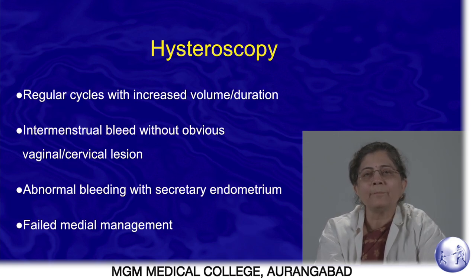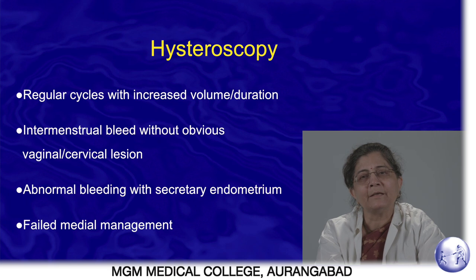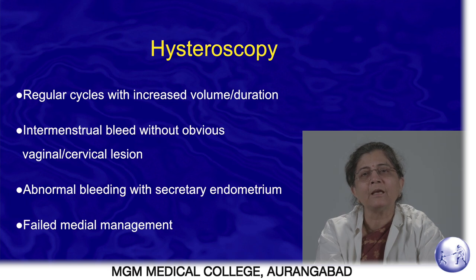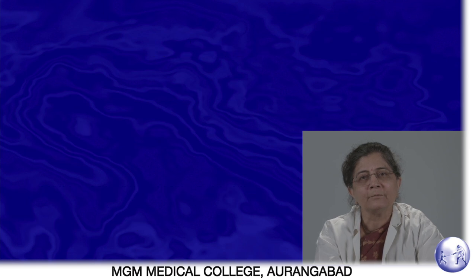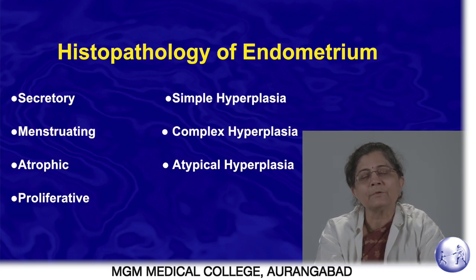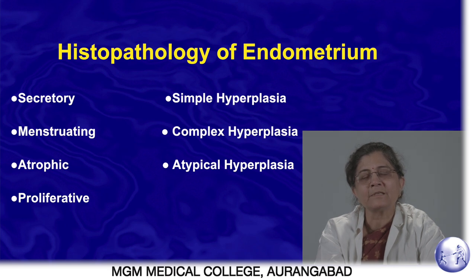Hysteroscopy is not required in all patients. It is indicated when there is no obvious pathology but irregular or very heavy bleeding is present, when malignancy is suspected, or when medical management has failed and we want to confirm the diagnosis. In selected cases only, hysteroscopy is advised. The role of biopsy is usually in the perimenopausal age group — patients around or beyond 40 years up to menopause.